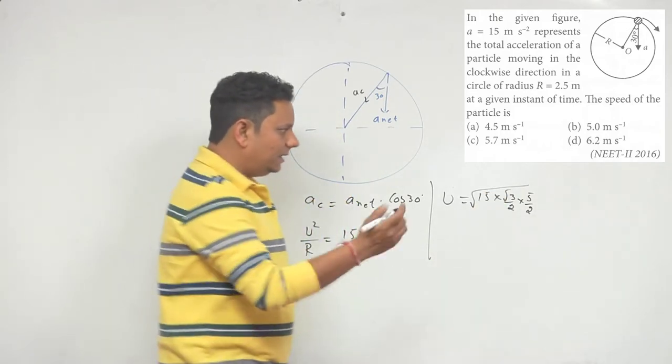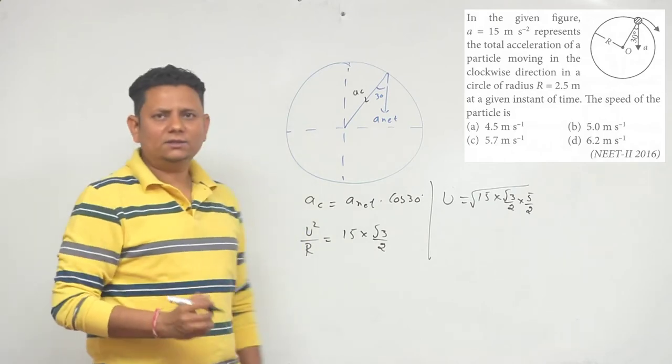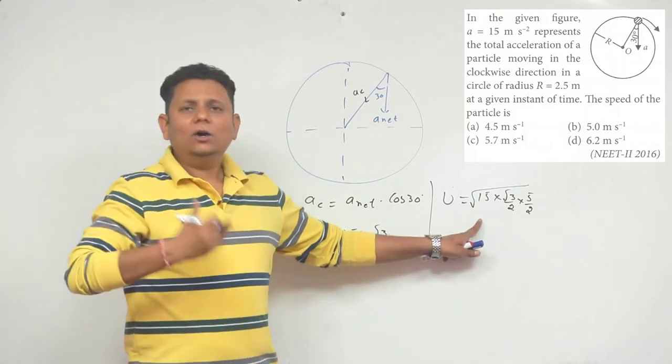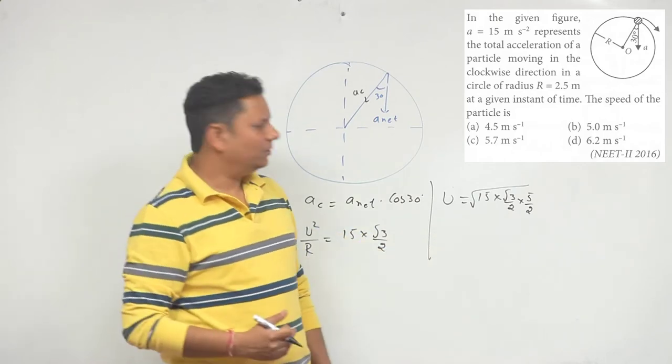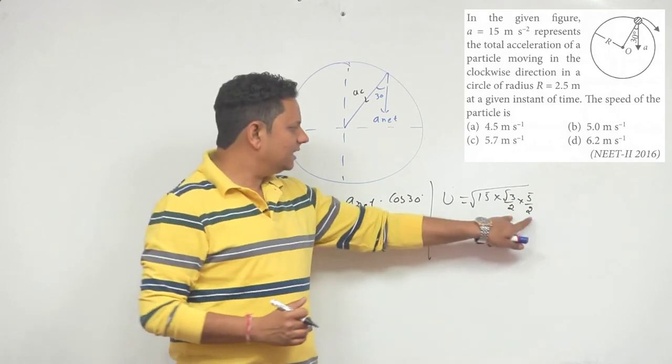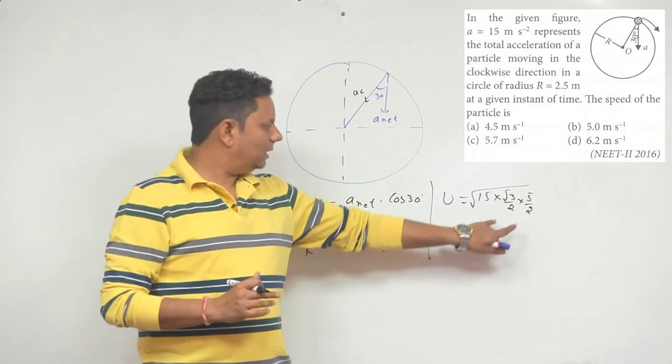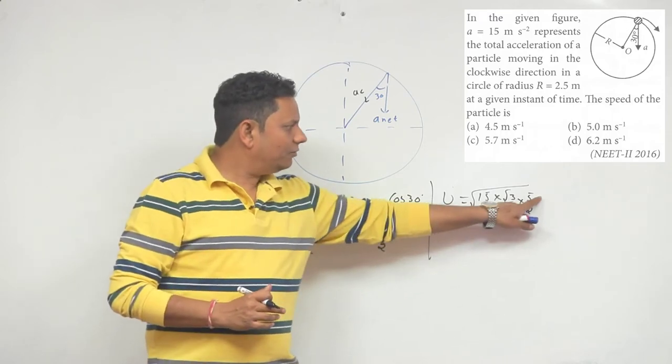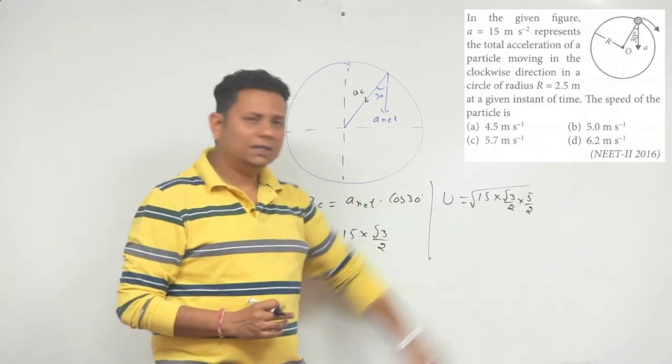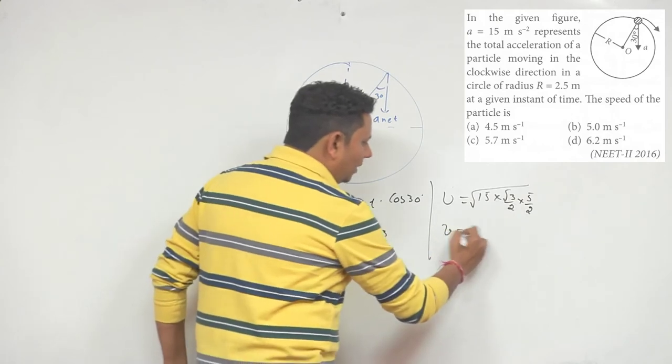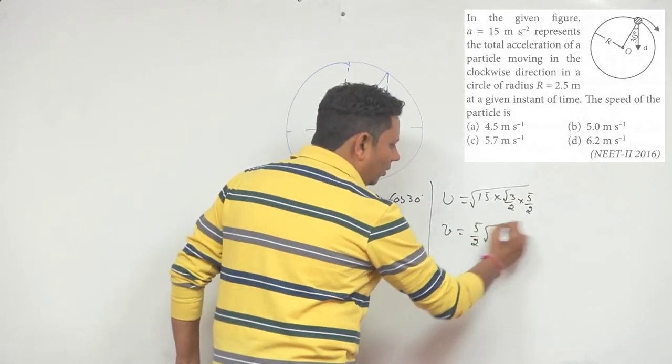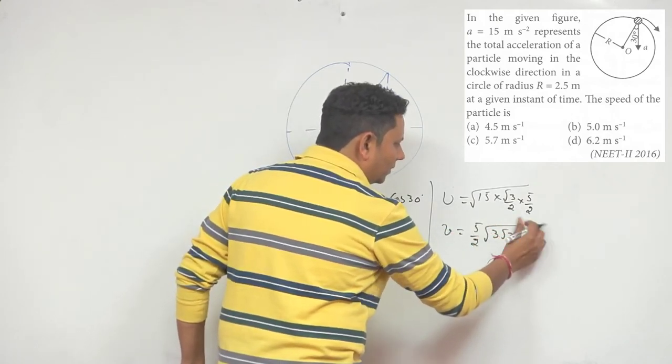On calculating this, this is a very interesting question. NEET students, many times this question has not been practiced, so it is a little difficult. Now notice that this is 2 into 2. When we take it under root, it will become 2. It will become 15 and 5, also 5. So V value is 5 by 2, and under root it will be 3 root 3.